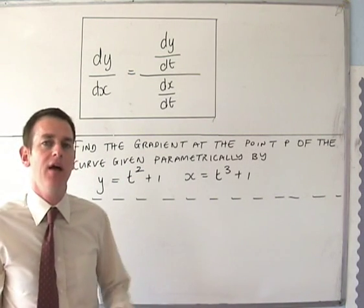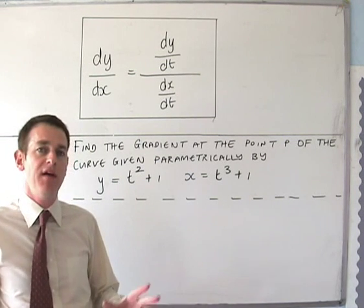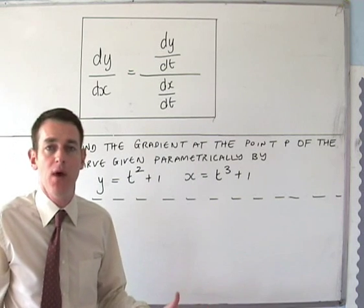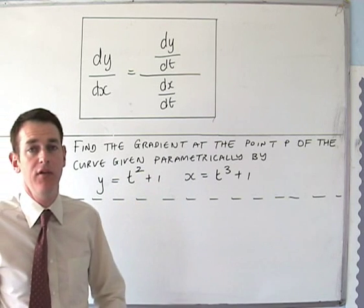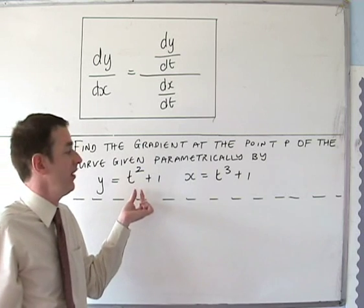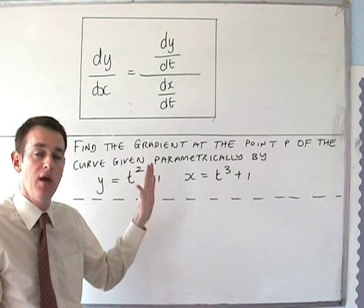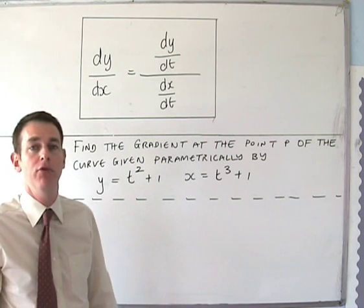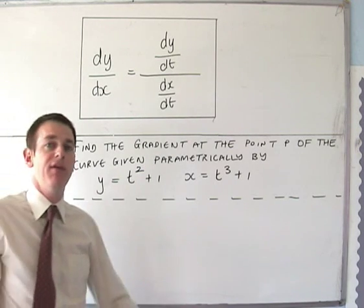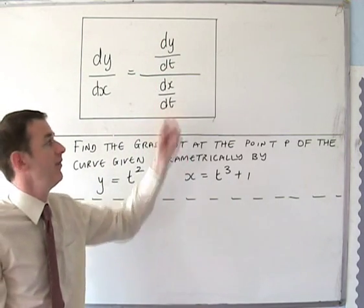Now we're going to start looking at differentiating parametric equations. Parametric equations are when instead of having y equal to 3x plus 1 or y equal to 4x squared, we've got both y and x in terms of t. If we wanted to draw this curve out, we'd need to stick in t=1 to both of them and draw the point, t=2 to both, and gradually draw all the way through. To differentiate, we use the fact that dy/dx equals dy/dt over dx/dt.